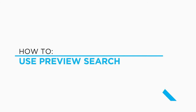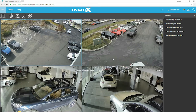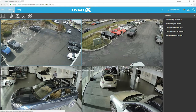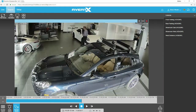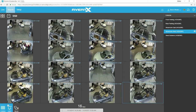Our new preview search will help you find events with a visual difference before and after the event, like theft or vandalism, in a matter of seconds. To use preview search, connect to your recorder using a web browser on a computer. Click the Search tab and then the Preview Search button on the bottom.